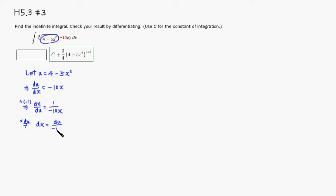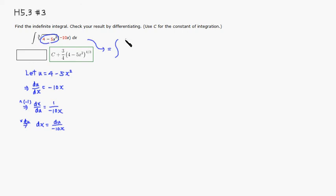We multiply both sides by du to isolate dx, so dx equals du over negative 10x. We can now rewrite the integral — we have the cube root of u times the dx term.